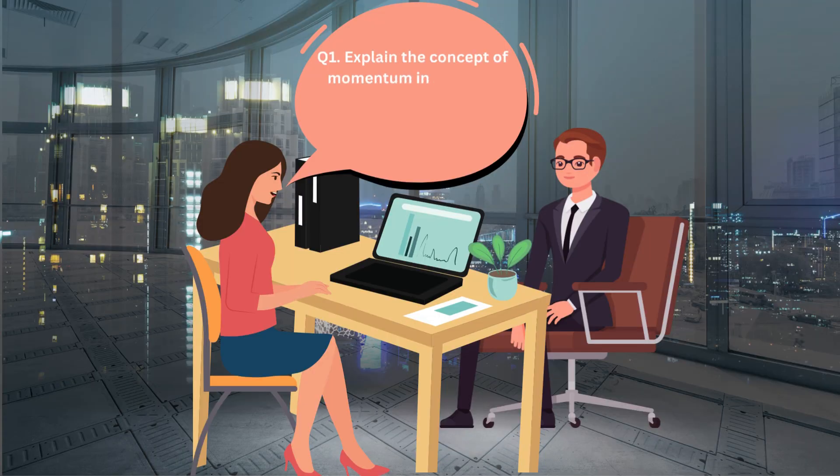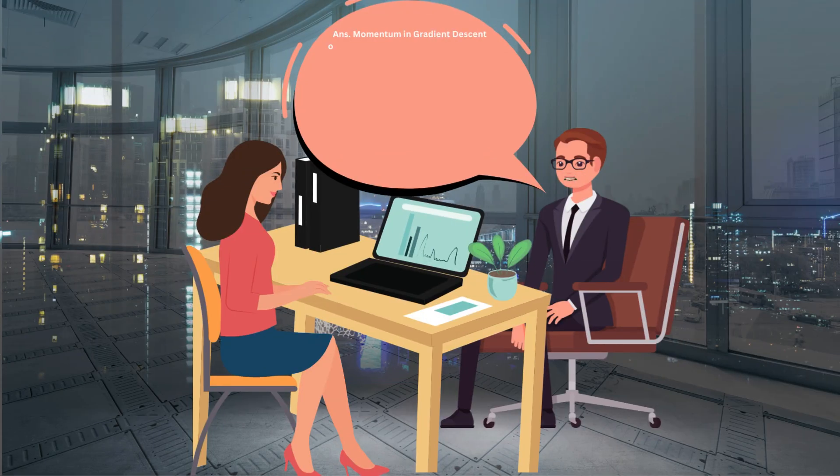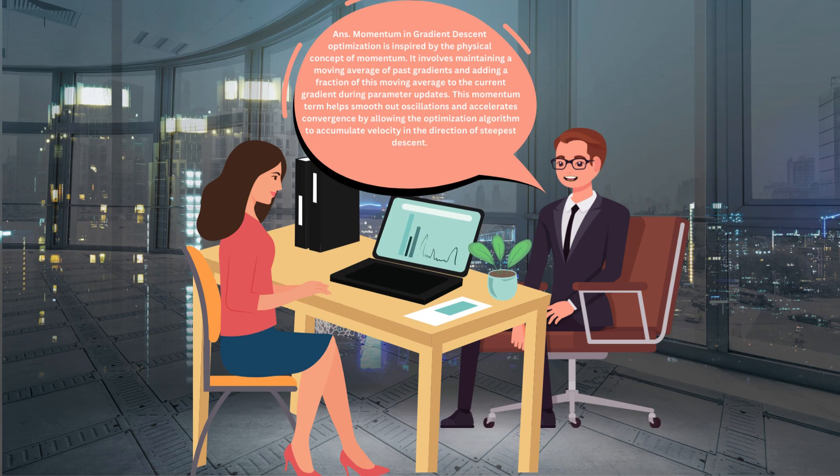Explain the concept of momentum in gradient descent optimization and how does it help in training deep neural networks? Momentum in gradient descent optimization is inspired by the physical concept of momentum. It involves maintaining a moving average of past gradients and adding a fraction of this moving average to the current gradient during parameter updates. This momentum term helps smooth out oscillations and accelerates convergence by allowing the optimization algorithm to accumulate velocity in the direction of steepest descent.